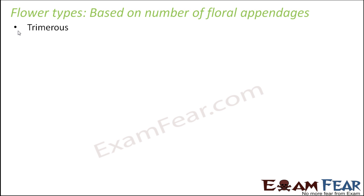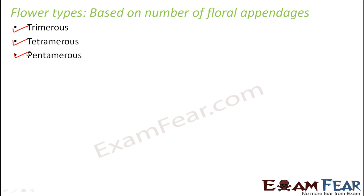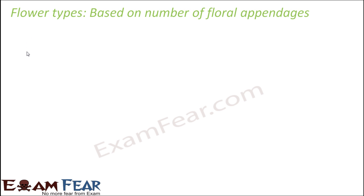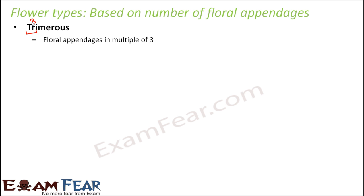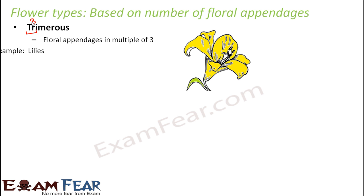Flowers can be of the following types: trimerus, tetramerus, and pentamerus. These are the three types of flowers based on how many floral appendages they have. When I say floral appendages, I am basically talking about the floral parts. Let us talk about each of them starting with trimerus. Trimerus means three, so they have floral appendages in multiples of three.